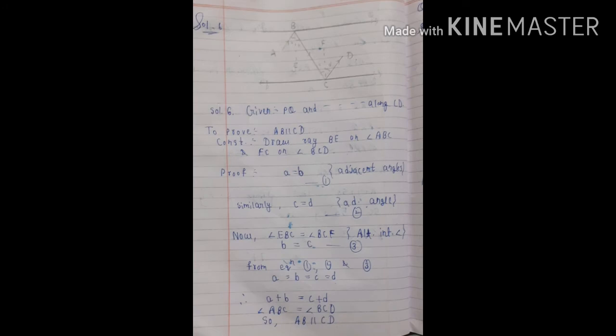You can mark this question important. In the diagram I made some changes: ray BE bisects angle ABC and ray CF bisects angle BCD — 'bisect' means a ray divides an angle into two equal parts. The two halves of angle ABC are named small a and b, and the two halves of angle BCD are named small c and d as seen in the diagram. Construction: draw ray BE bisecting angle ABC and ray FC bisecting angle BCD.